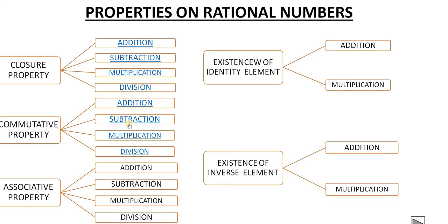For every property we will check all four operations. If it is commutative property, all four. If it is associative, all four. But for existence of identity element and existence of inverse element, there is no meaning talking about identity or inverse in subtraction and division. So we will go one by one.